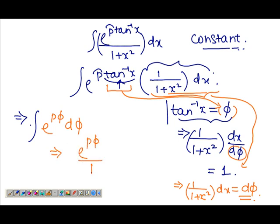That's the answer. You should of course replace phi by tan inverse x. Sorry about that, should replace phi by tan inverse x. So you get e to the p tan inverse x over p plus c, which is your answer. So that's how you use substitution method.